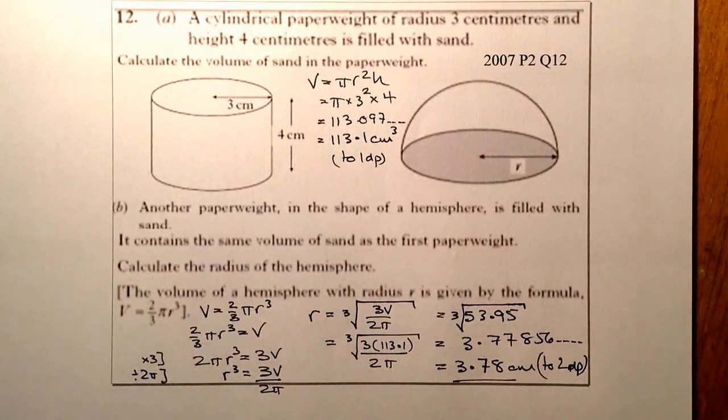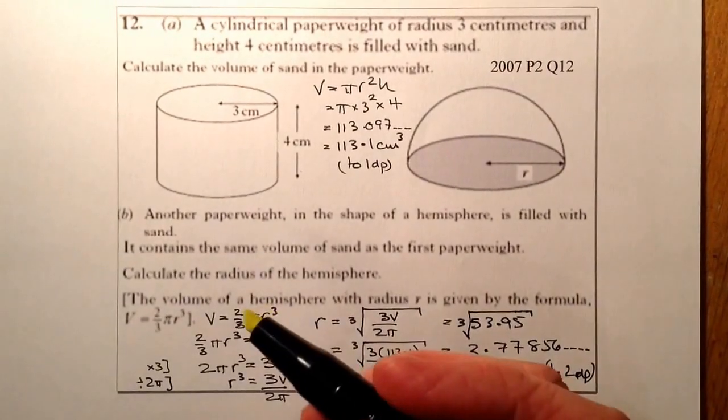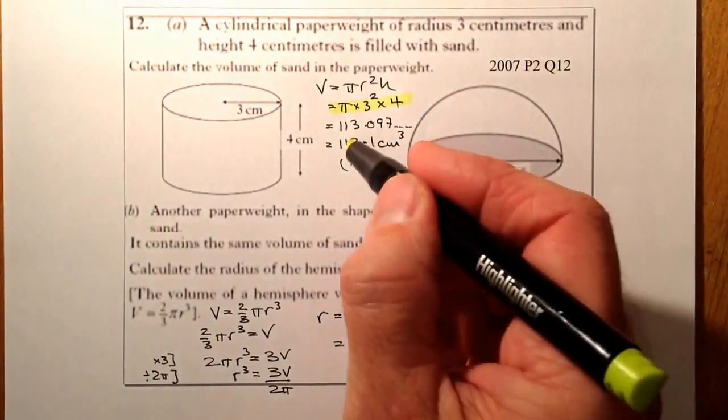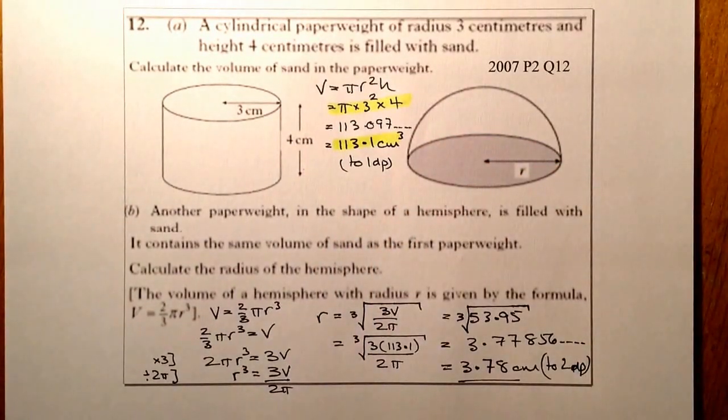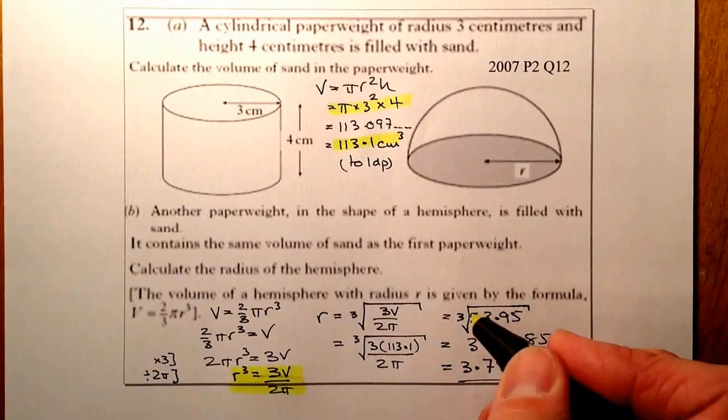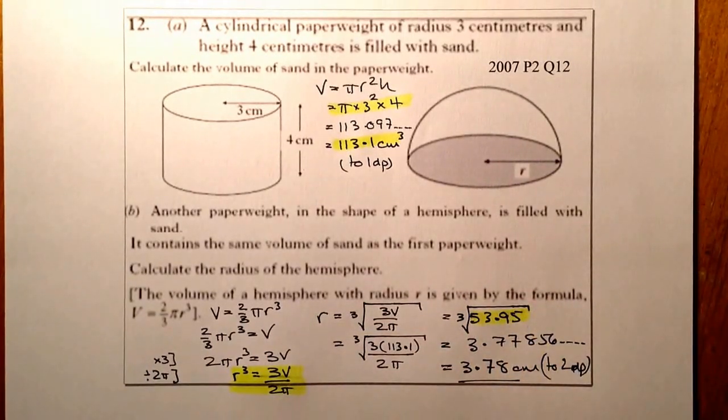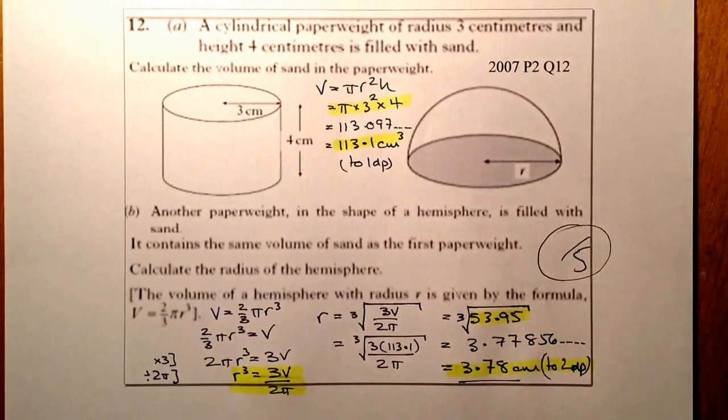For marking, I'm going to get two marks for part A: one mark for substituting correctly into the formula, and one mark for getting the volume of sand. For part B, I'm going to get one mark where R³ equals 3V/(2π) or if the values are put in place. One mark for working out 53.95, and then finally one mark for getting the cubed root, which is 3.78 as the final answer. Two marks for part A, three marks for part B, so this question is out of five.